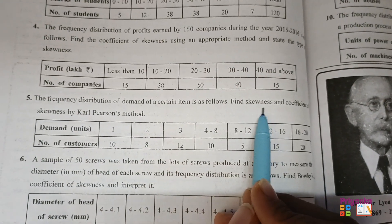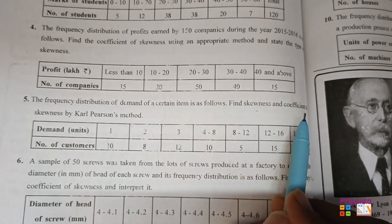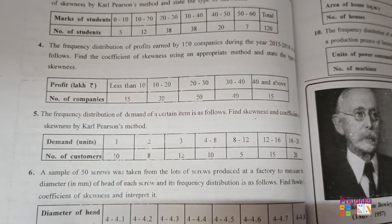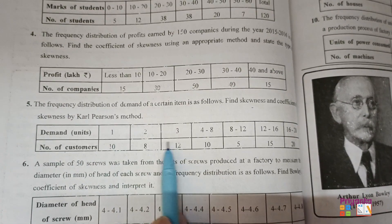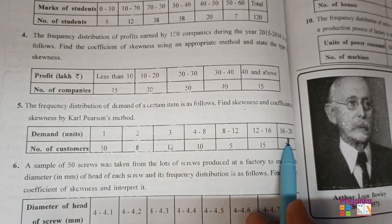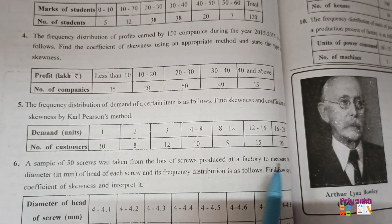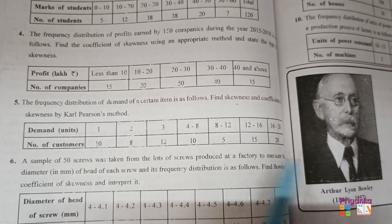Now this is I think the first time they are asking skewness separately and even the coefficient of skewness by Carl Pearson method. And here the information is half given in discrete and half in continuous frequency distribution. And this is what the frequency is given.